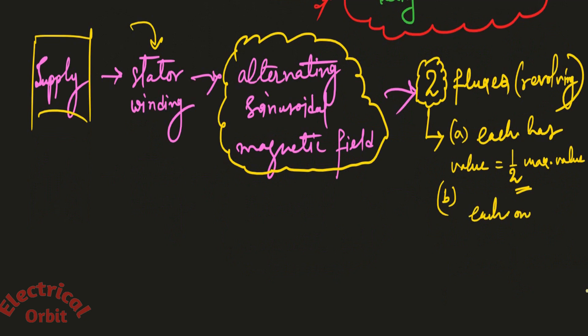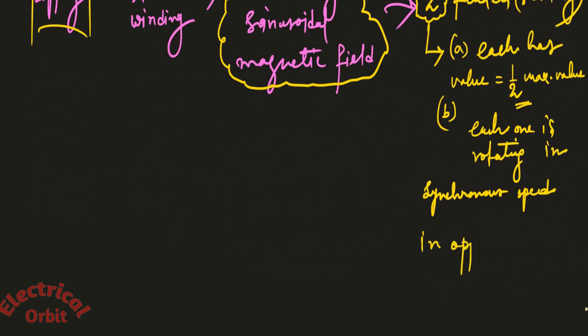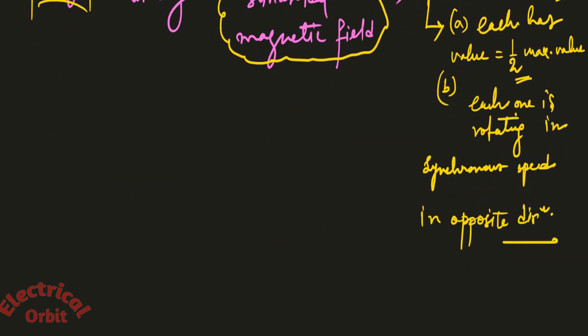So let me explain. Suppose this is a flux Φ_M that has been created by the supply to the stator winding. Now this Φ_M can be divided into two equal fluxes which is Φ_1 and Φ_2. Φ_1 and Φ_2 are rotating opposite to each other at synchronous speed. So this is the synchronous speed n_s. So if we take Φ_1 equal to Φ_2, then that is equal to Φ_M by 2. So all the things that I have said through these assumptions is explained in this diagram.